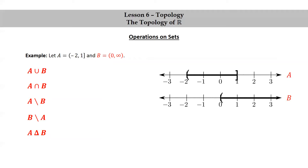It's also a good idea to draw vertical lines at each endpoint of each interval. So notice I put vertical lines at negative 2 and 1, because those are the endpoints of interval A. And I also put a vertical line at 0, because that's the only endpoint of B. And now we could use these lines as guides to help us find the sets that we're looking for.